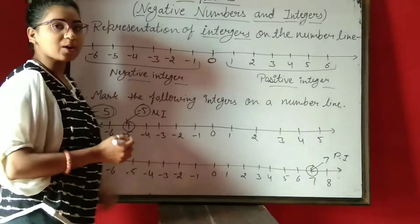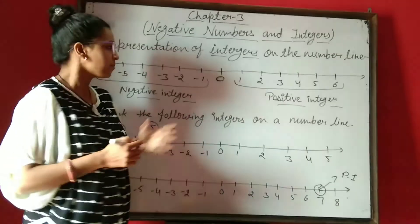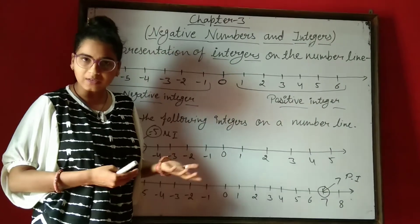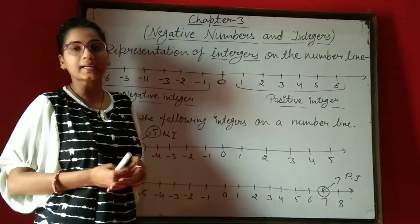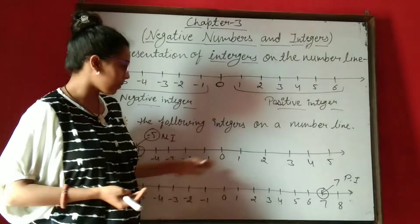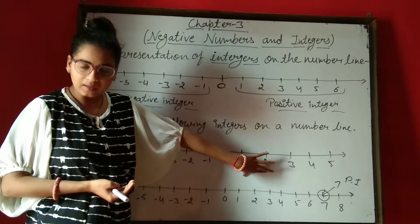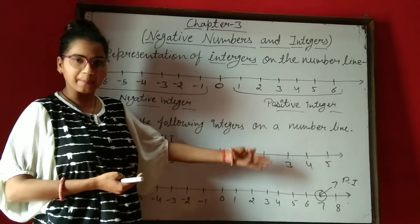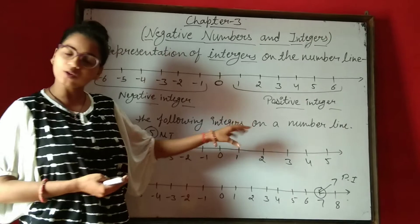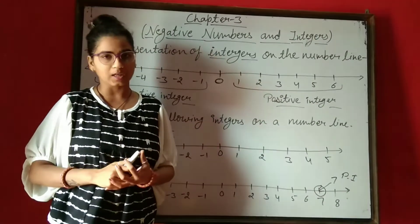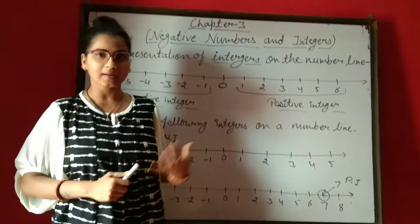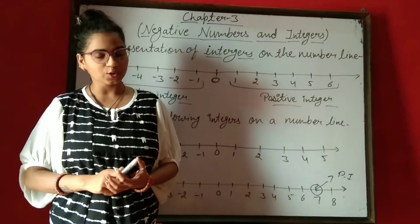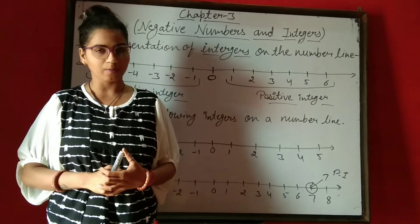Means आपने इस type के questions solve करने के लिए, सबसे पहले number line draw करनी है, check करना है कि positive integer represent करना है या negative integer. उसके बाद number line पर integers mention करके उसे simply circle से mention कर देना है. All understood this topic — tomorrow we will continue with a new topic. Thank you so much.